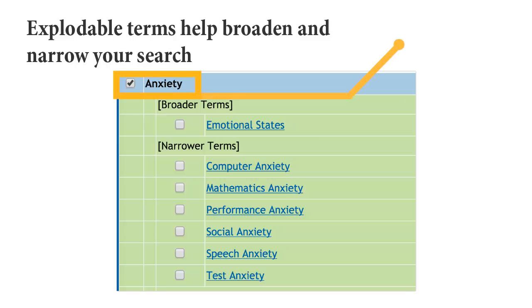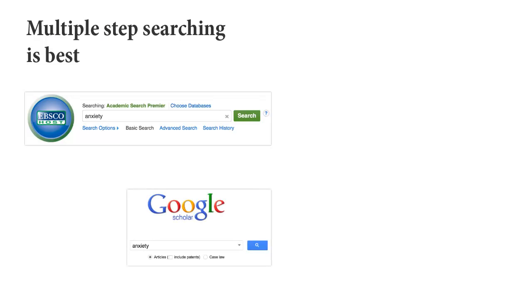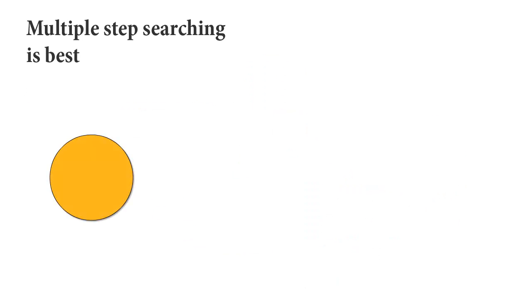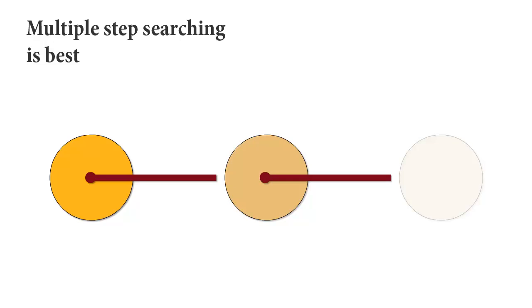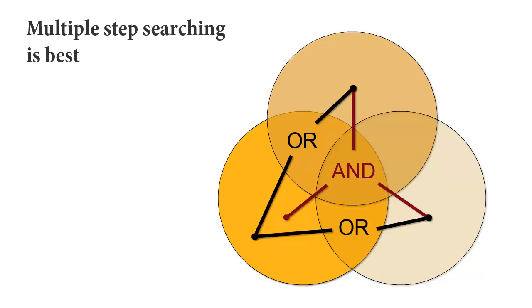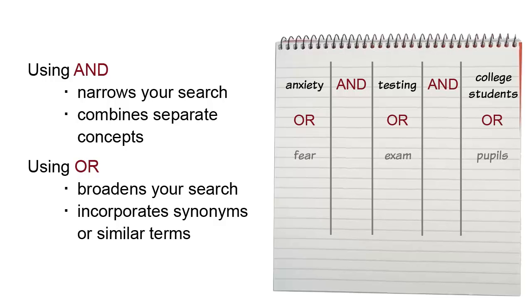An explodable term is a general term that has more specific terms indexed underneath it. Unlike databases like Academic Search Premier or Google Scholar, where you enter your search terms into one box, PsychInfo uses a multiple-step set-based search, where you search each of your terms separately, then combine your search terms with Boolean operators AND and OR. Use AND to narrow your search by combining separate concepts. Use OR to broaden your search by entering synonyms or similar terms.